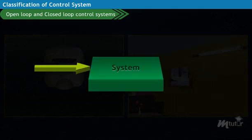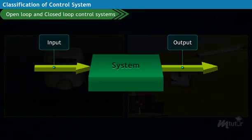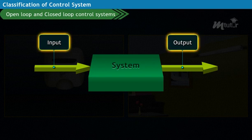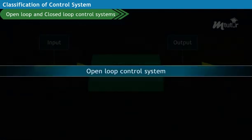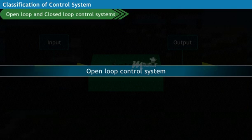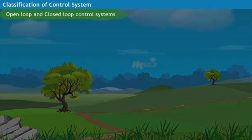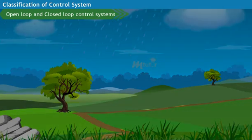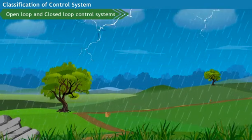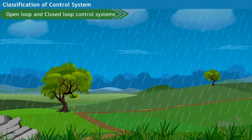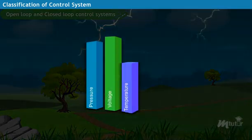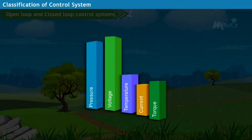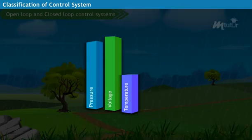From the examples, you can understand that if the output of the system has no effect on the input signal, then this system is called the open loop control system. As a result, the open loop control system may not function as desired due to various reasons such as the changing environment, changes in the system parameters, and due to the inefficiency of the system components used.